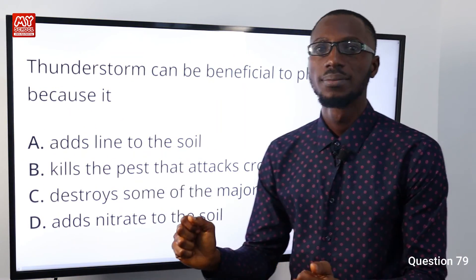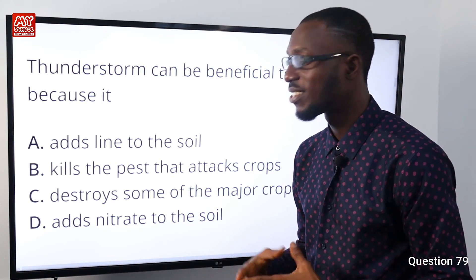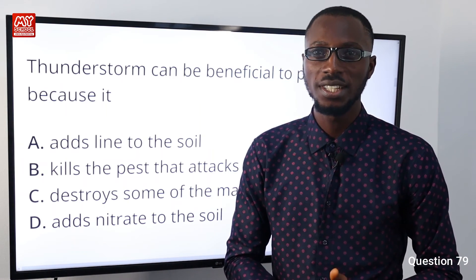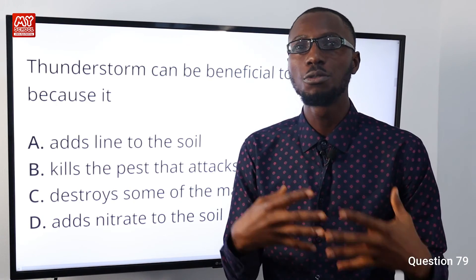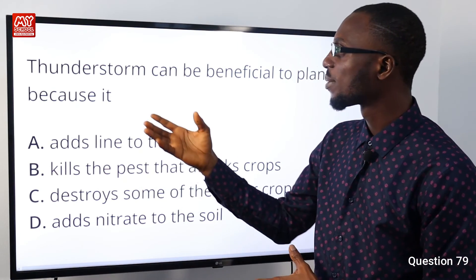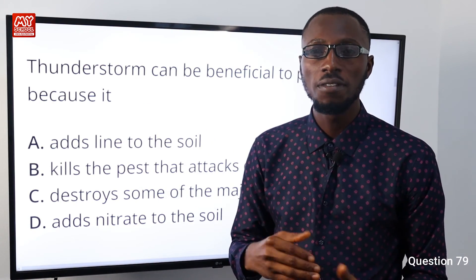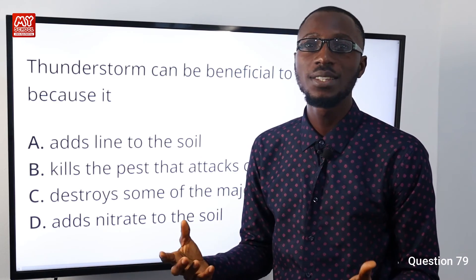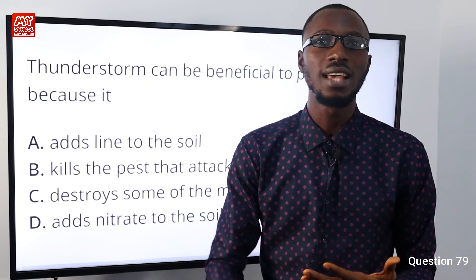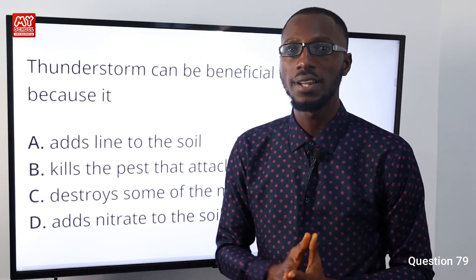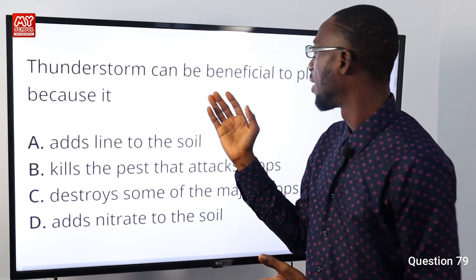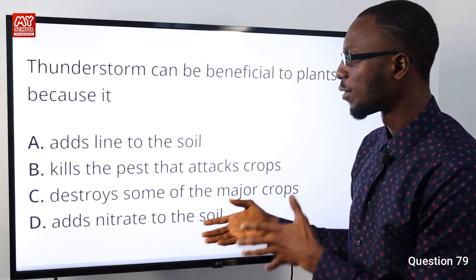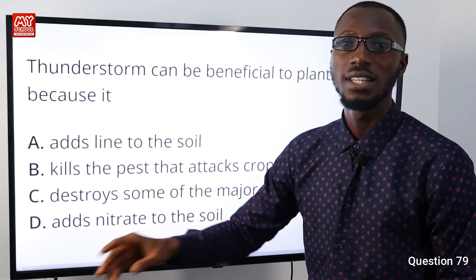Question 79: Thunderstorm can be beneficial to plants because it does what? About 70% of our atmosphere contains nitrogen, which is unstable and unusable to plants. When a thunderstorm occurs, it helps to dissolve this unstable, unusable nitrogen in water, forming groundwater that plants can tap from — taking in this nitrogen as a natural fertilizer. Thunderstorm can be beneficial to plants because it adds nitrates, converting atmospheric nitrogen to nitrates in the soil which the plant takes in. Option D is very correct.